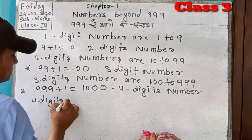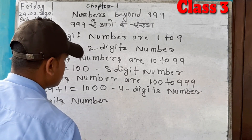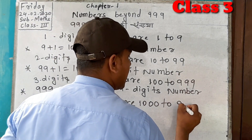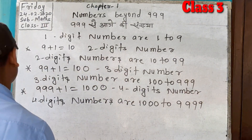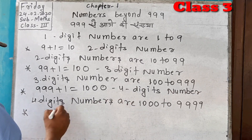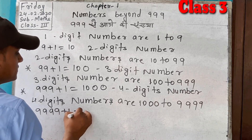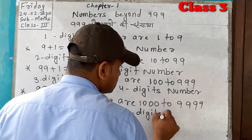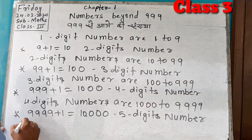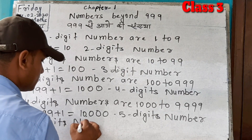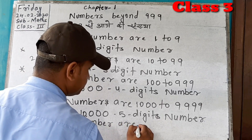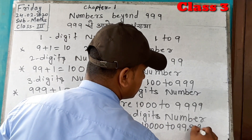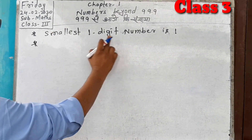Four-digit numbers are 1000 to 9999. If we add 9999 plus 1, it is equal to 10,000, which is a five-digit number. Five-digit numbers are 10,000 to 99,999.